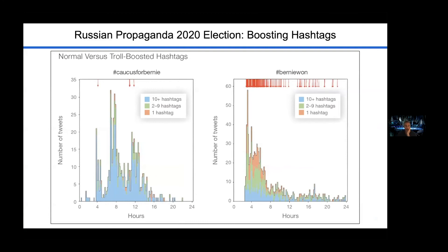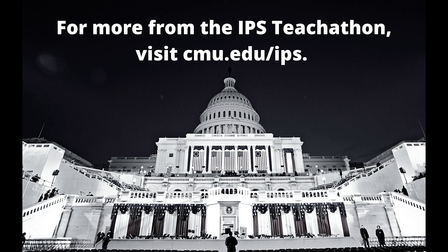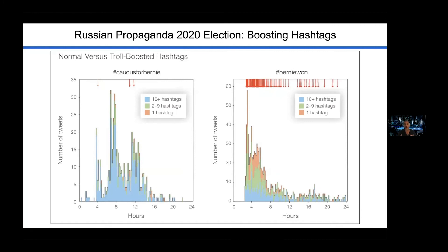Here's an example of how these trolls, in addition to all this hyper-partisan content, boosted hashtags in coordination in a very suspicious, non-human way. On the left-hand side is a tweet — 'Caucus for Bernie' — and you can see that most people who tweeted it used 10 or more hashtags, which is normal. On the right-hand side, 'Bernie Won' emerged immediately after the caucus had ended, clustered in the Bernie Sanders community. And most of those accounts used fewer than 10 hashtags — really unusual behavior. So coordinated, unusual hashtag behavior from accounts that our troll algorithm flagged — another intersecting, triangulating way of confirming that there's a problem.